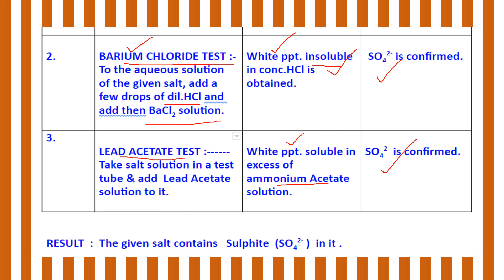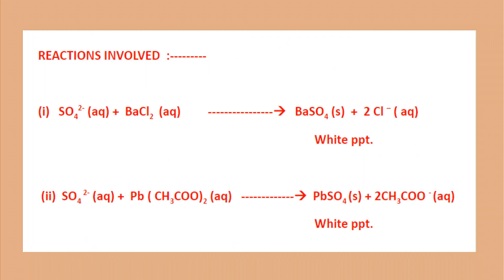Now the result, in accordance with the aim: the given salt contains sulfate. These are the reactions involved for both tests. The first one is the barium chloride test: aqueous solution of the salt with barium chloride solution gives a white precipitate of barium sulfate, BaSO₄, which is insoluble in concentrated HCl. For the lead acetate test, aqueous solution of the sulfate salt with lead acetate aqueous solution again gives a white precipitate of PbSO₄. This completes the tests for sulfate.